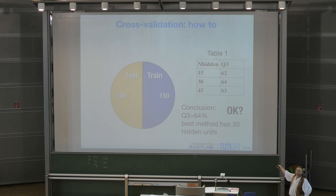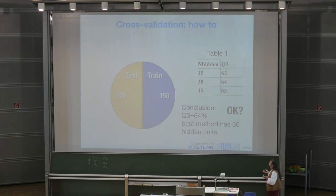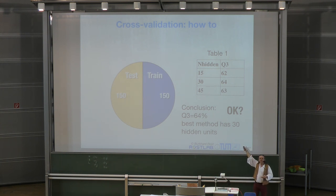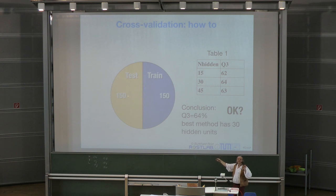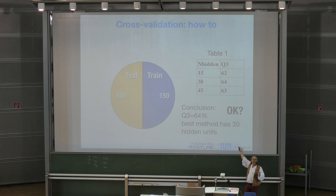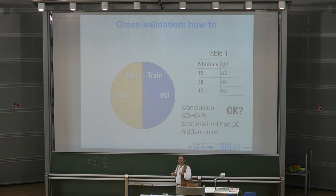They say they have three different models — in this case, three different numbers of hidden units, or it could be SVM versus linear regression. The values shown are the values obtained for the test set. Then at the end of the paper, you say 'I tried many different ways and the best way was this, because that is the highest number.' And that is the mistake.